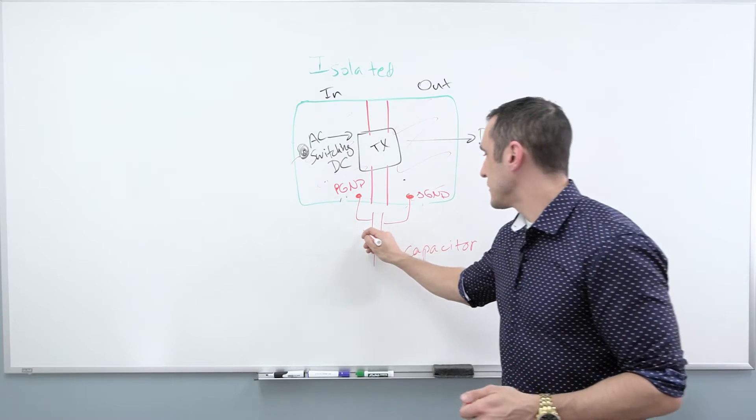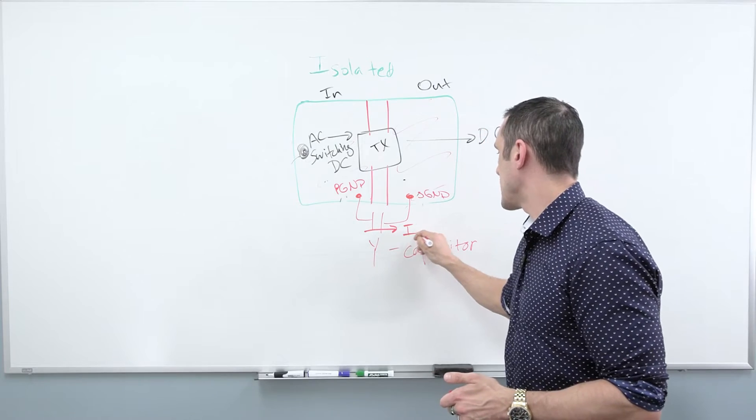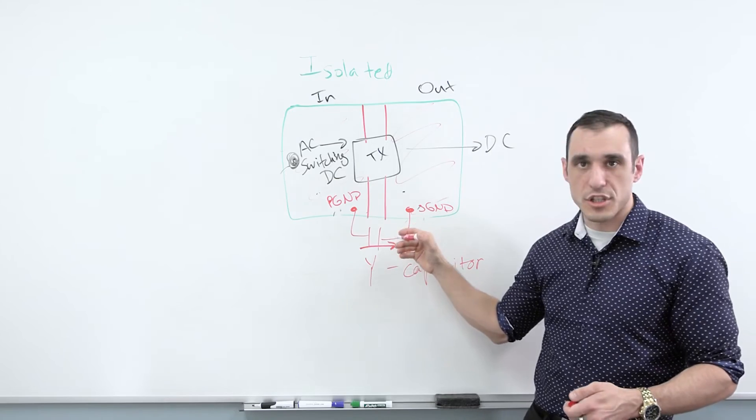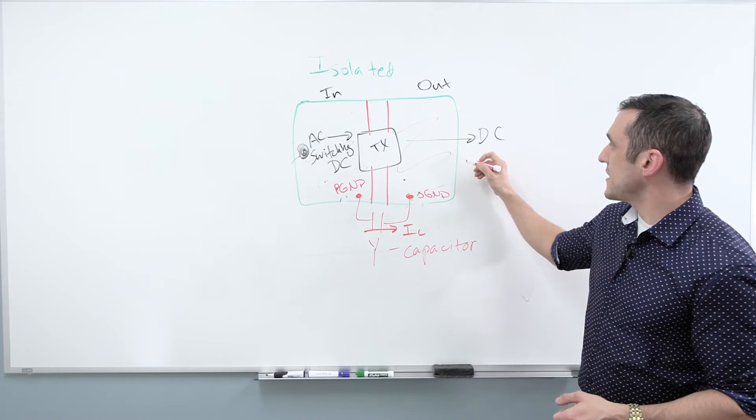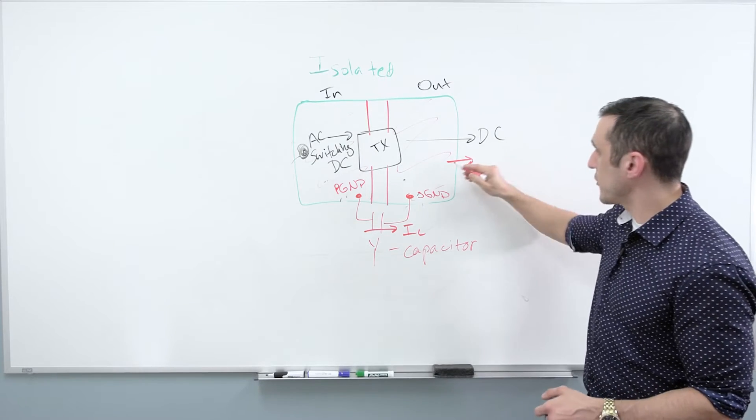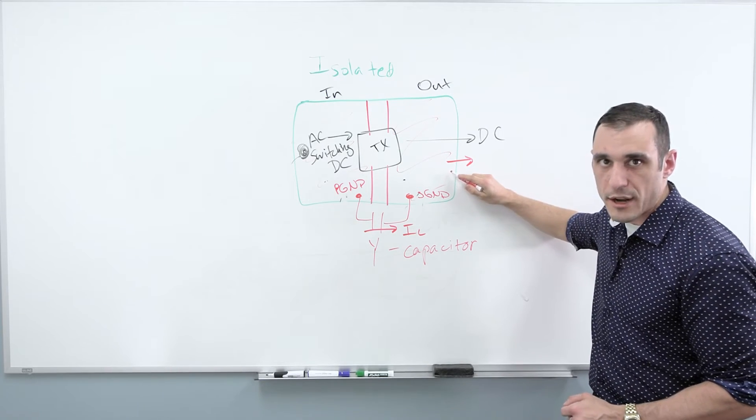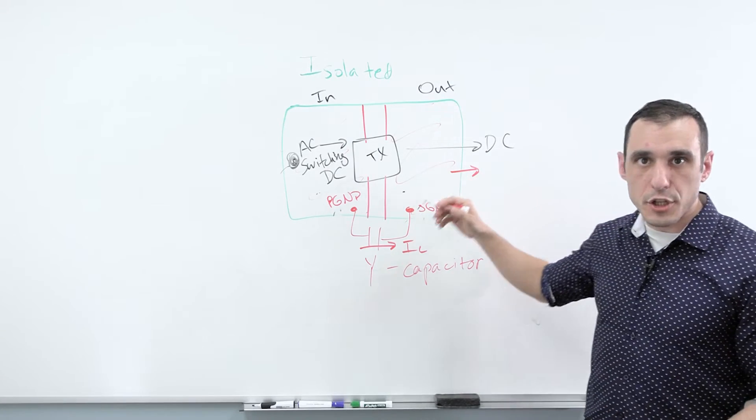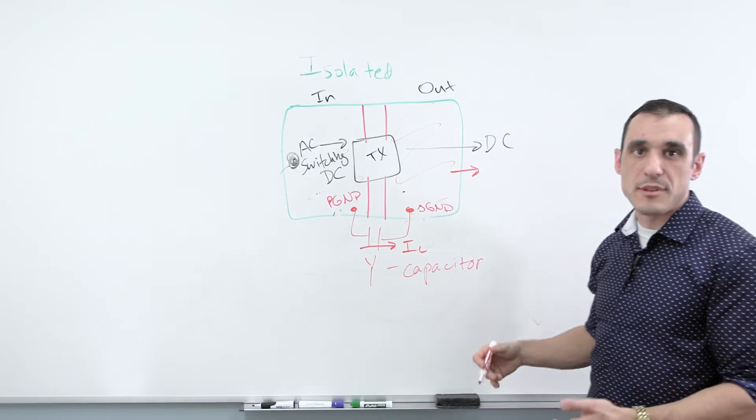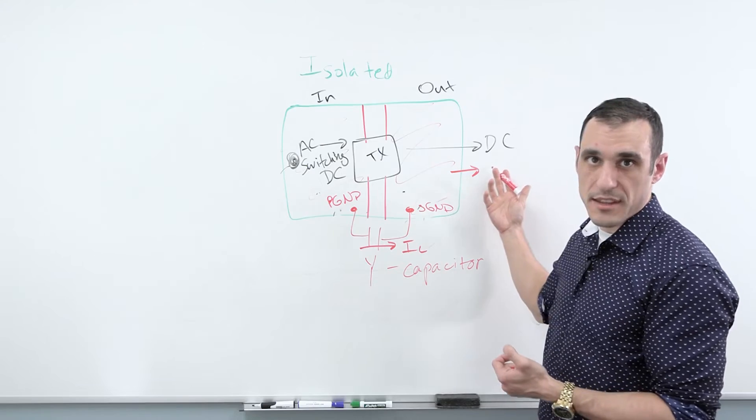Now, there can be some leakage current, just call it I sub L, that exists across this particular connection. And this leakage current can then flow out through the DC output, which is referenced to this secondary ground region. So that leakage current could be a very small annoying shock, or it could actually be dangerous, or it could destroy something that is very sensitive.